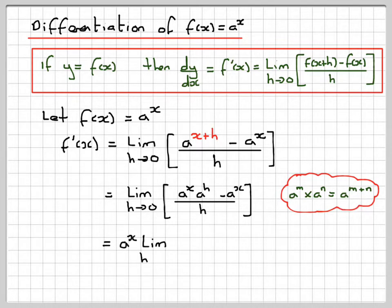Now a to the x is not part of the limit, so that can actually come out. So we have a to the x times the limit as h goes to 0 of a to the h minus 1 over h.